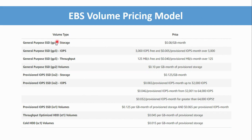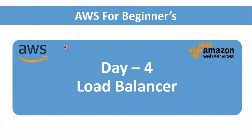For the pricing model of EBS volumes, you can see the volume type and the associated pricing. You can pause the video to read each item. Pricing is shown per GB. According to your use case, workload, and performance requirements, you can choose the appropriate volume type for your project.